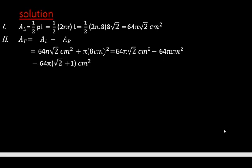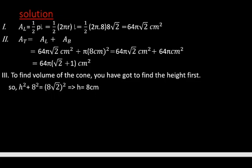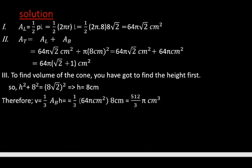The third question is the volume of the right circular cone. We consider one-third the product of the area of the base and the altitude. We have the area of the base, but we need to find the altitude. Applying the Pythagorean theorem: altitude² + radius² = slant height², giving altitude = 8 centimeters. The volume is one-third × 64π × 8 = 512π/3 cubic centimeters. This is all about today's lesson, thank you very much.